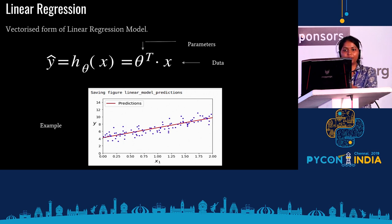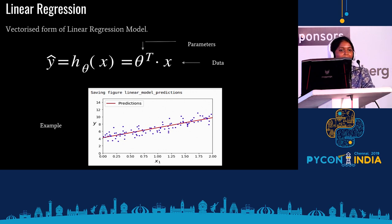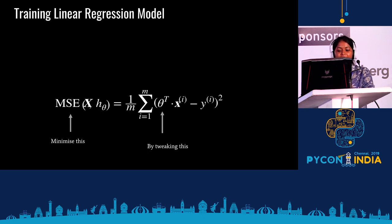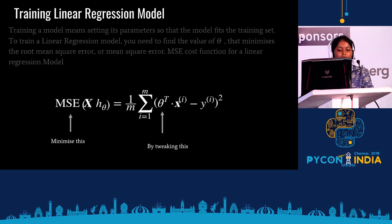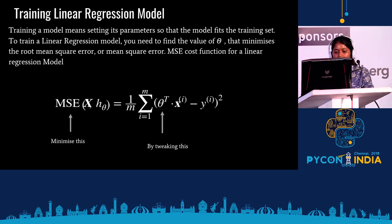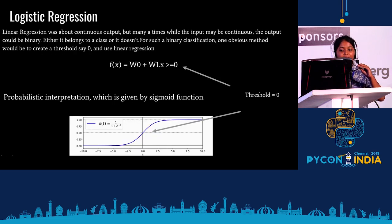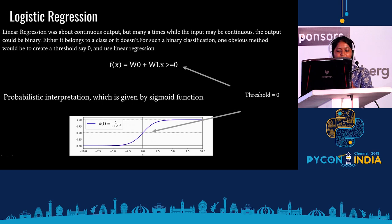A little bit about machine learning. Most of you might know linear regression and logistic regression. Linear regression is fitting a line through a maximum number of data points. We tweak the parameters — theta transpose dot X — and minimize the mean square error. Logistic regression is a binary classification: zero or one. Any given point either falls in zero or one based on a threshold. The sigmoid function is the probabilistic interpretation of logistic regression.